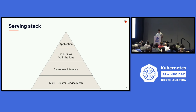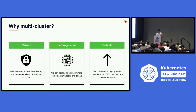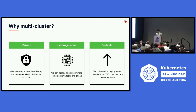The Predibase serving stack can be broken down into several distinct layers, the first of which is our multi-cluster service mesh. The reason for multi-cluster is firstly that customers care about privacy — building with a multi-cluster service mesh has allowed us to deploy data plane components where serving and fine-tuning happens into the customer VPC, so they remain in control of their data.